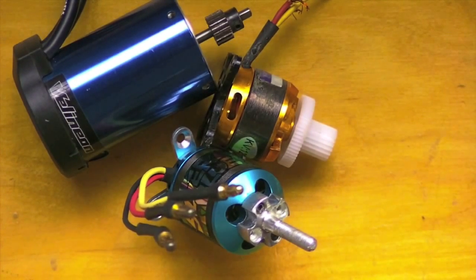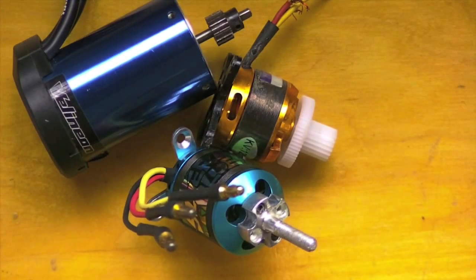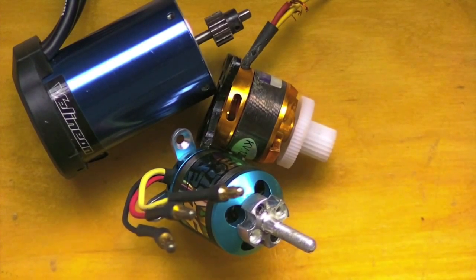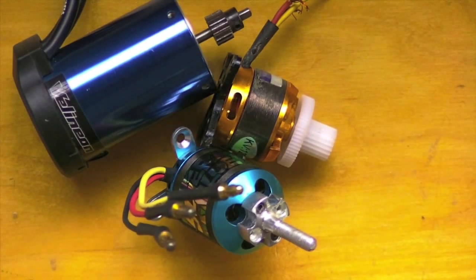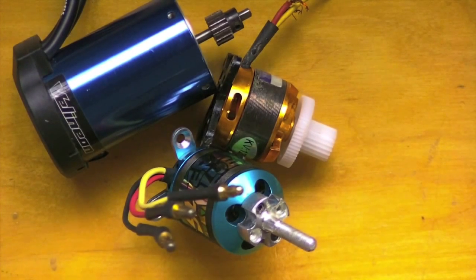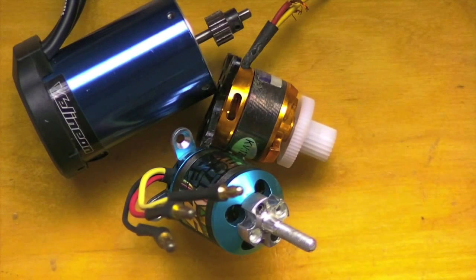Brushless motors come in two types: in-runners, like this one, and out-runners, like these. In-runners have the rotor on the inside of the stator, while out-runners have it outside the stator. In-runners produce less torque but have higher RPMs. Out-runners are just the opposite and produce higher torque but at lower RPMs.